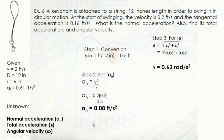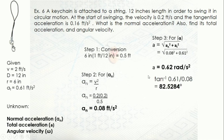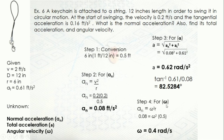Step 3 for total acceleration: it is the vector sum of the normal and tangential accelerations. Squaring and taking the square root of 0.08 squared plus 0.16 squared gives 0.62 rad per second squared. The angle is found using tan⁻¹(0.61), giving 82.53 degrees. Step 4: for angular velocity, using the formula a-sub-n equals omega squared times R, and since we have solved for a-sub-n and have the radius of 0.5 feet, we can solve for angular velocity.